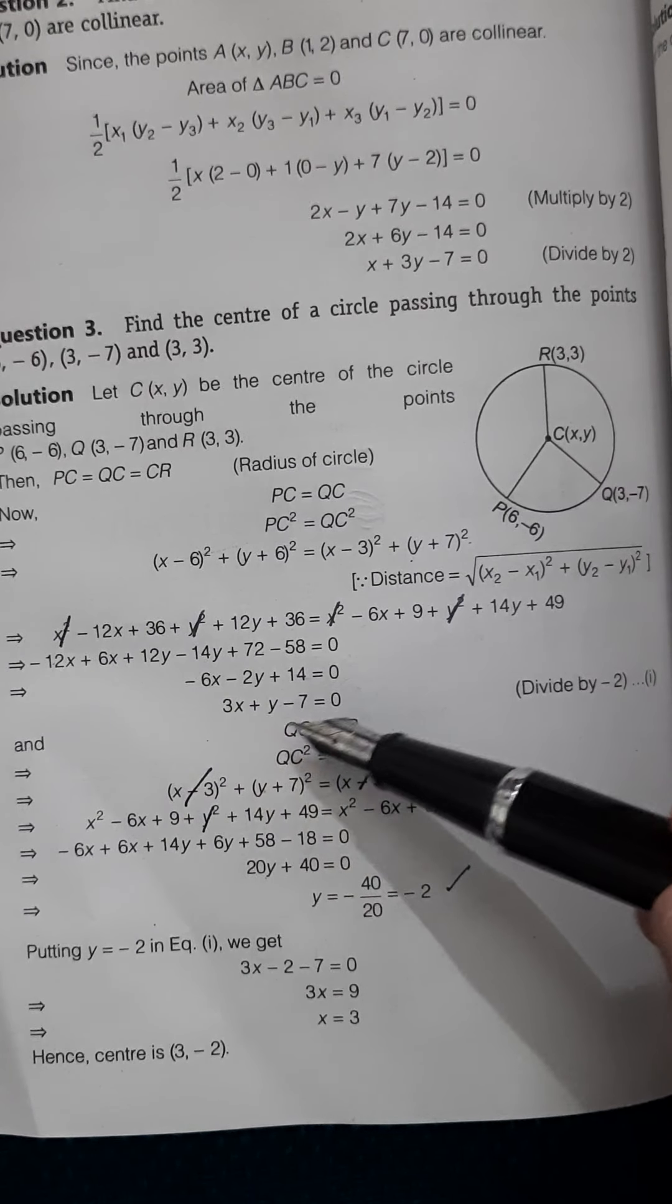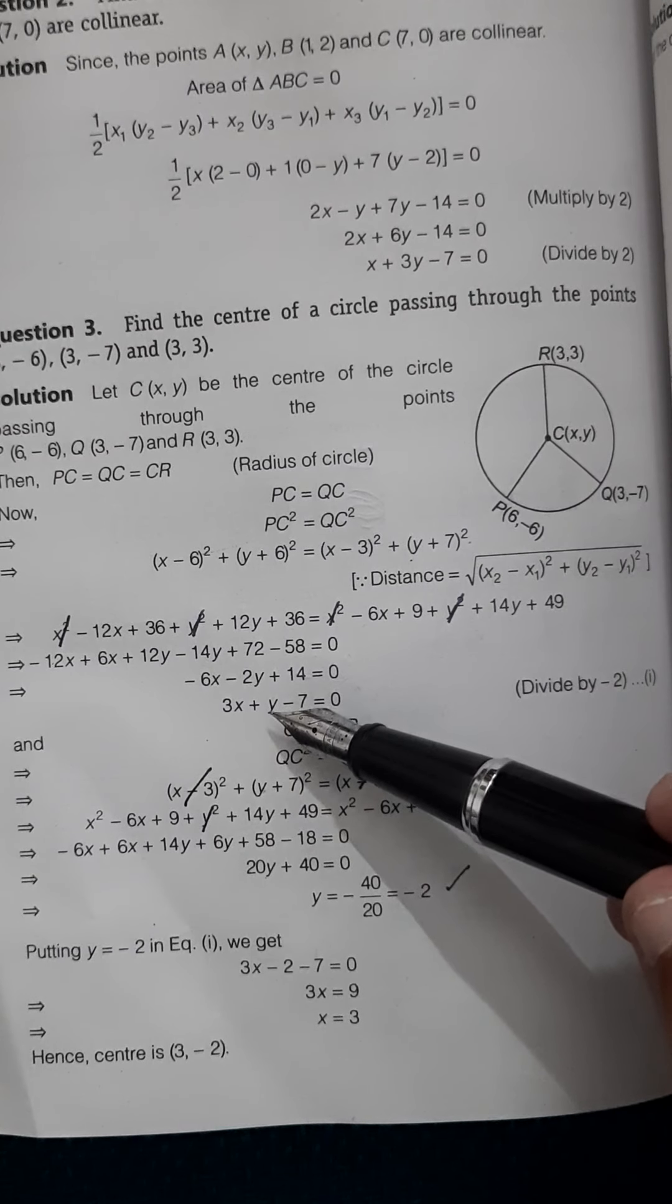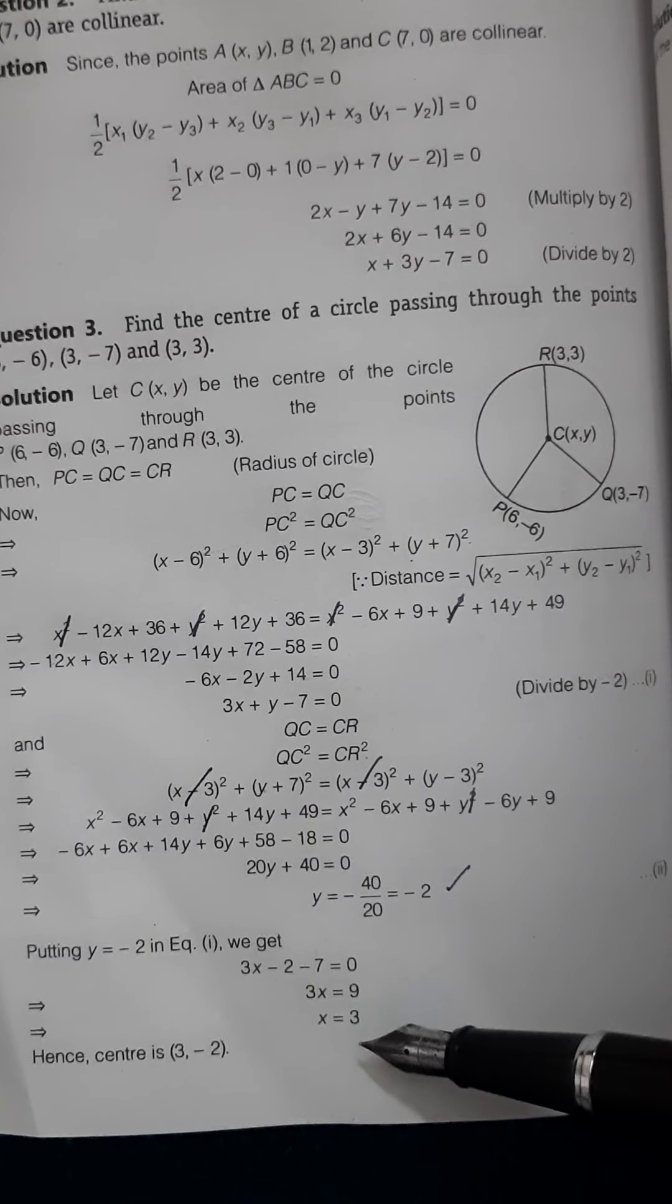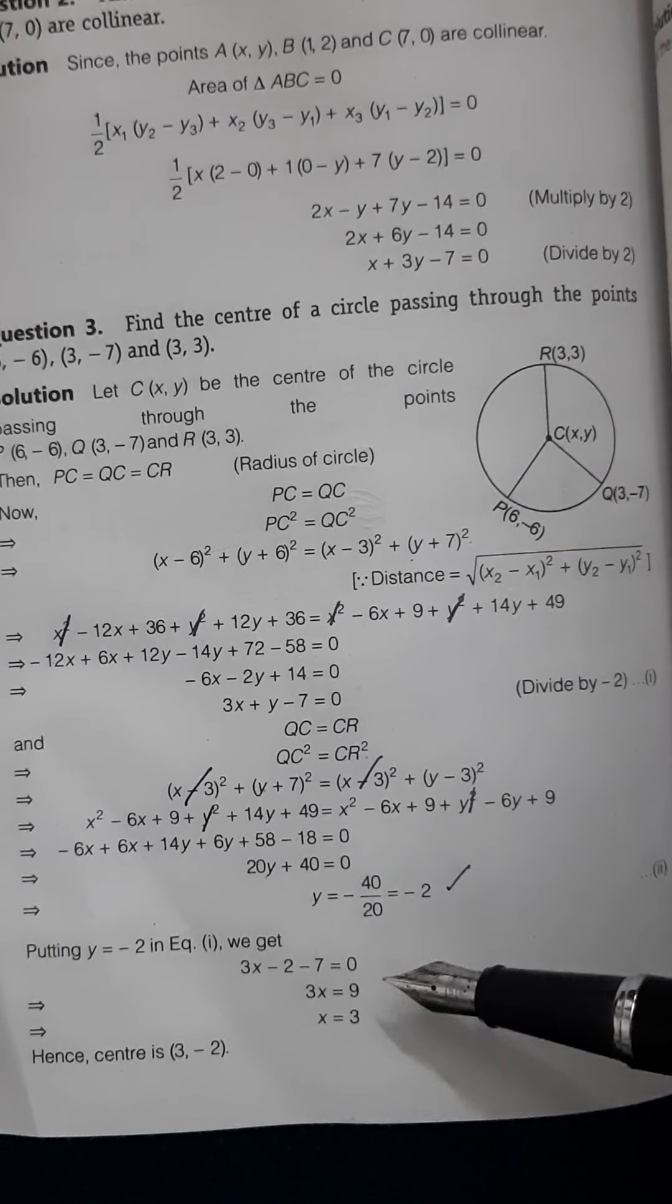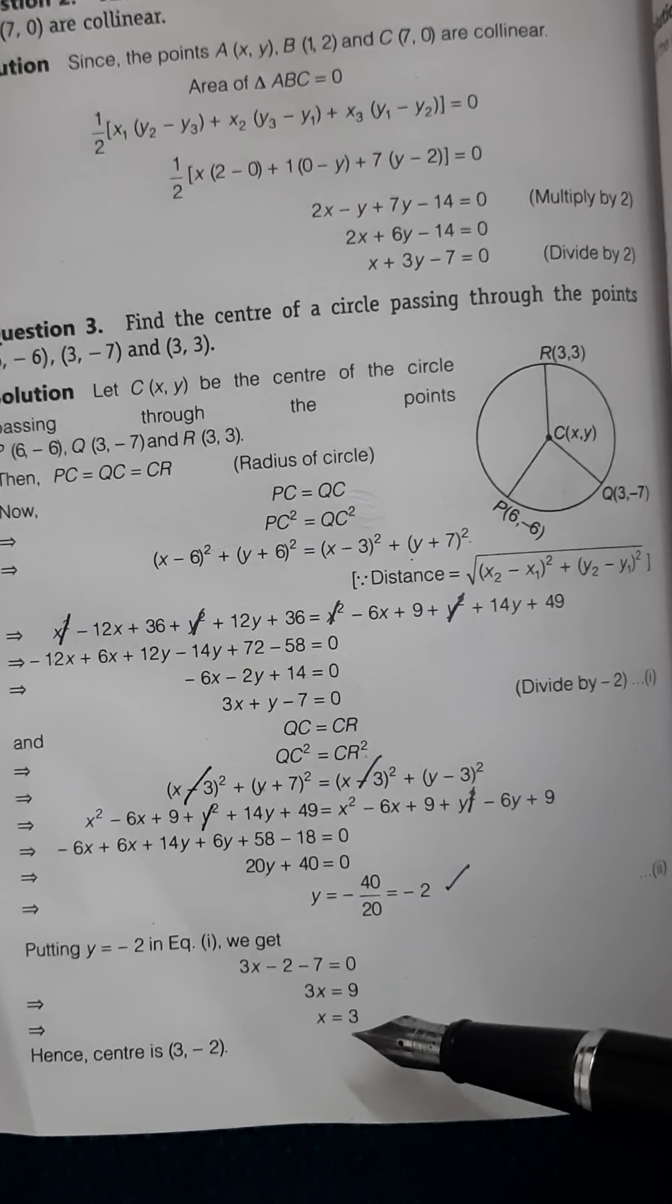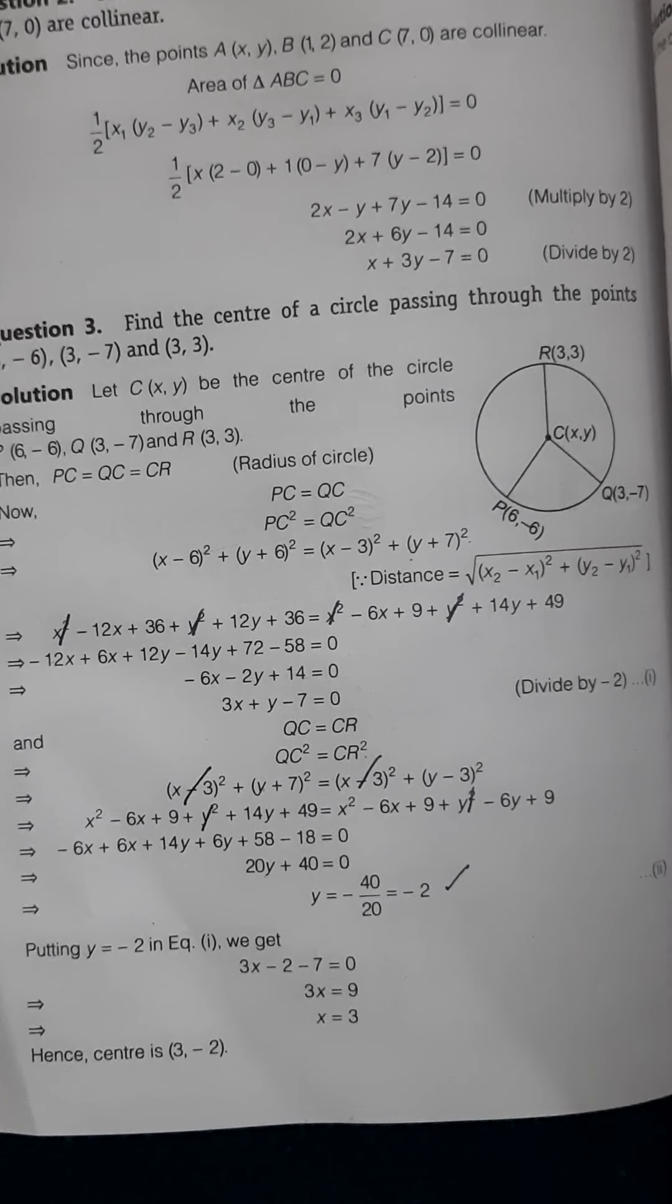We put the value of y as -2, so 3x is 9, and x will come out to be 3. So what are the coordinates of the center? The coordinates of the center will come out to be (3, -2).